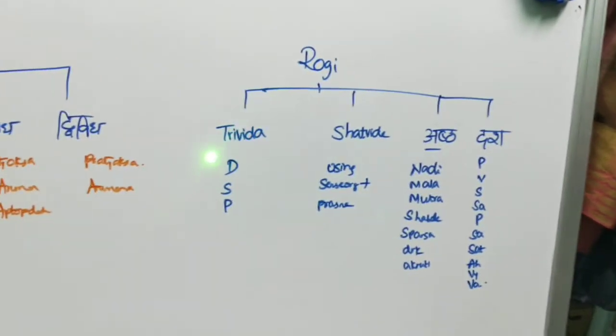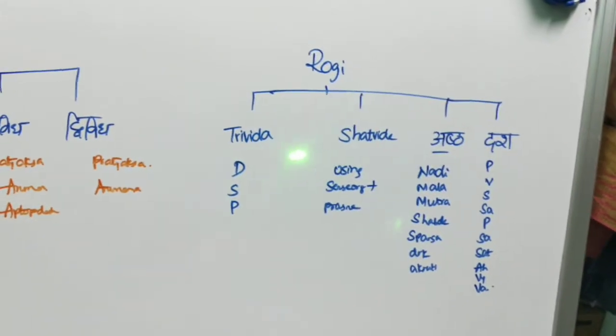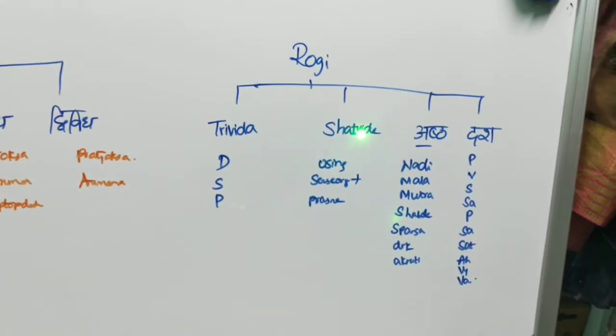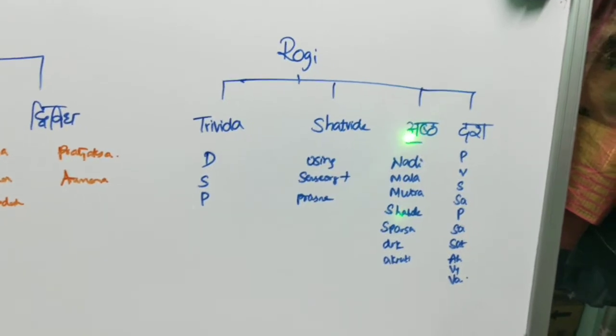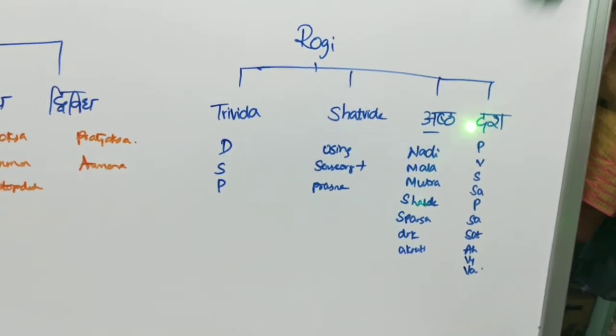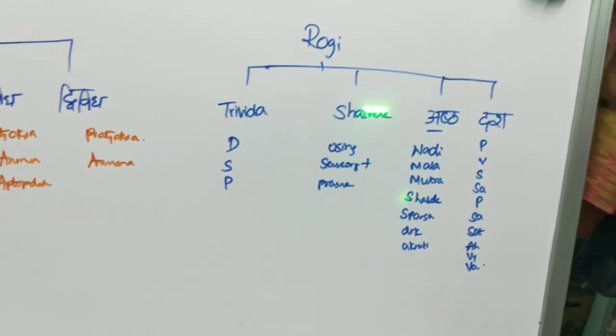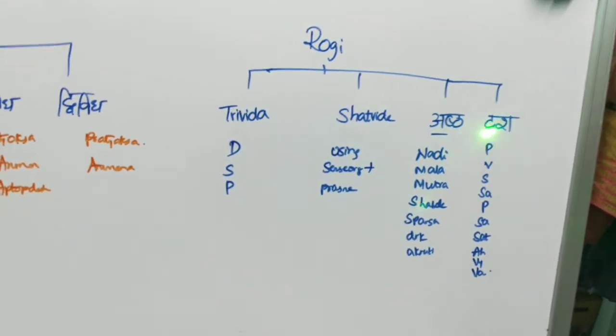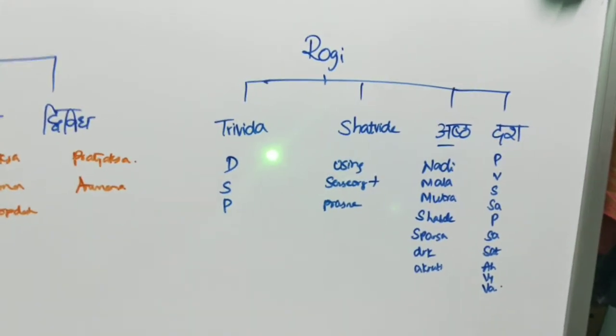Coming to Rogi Pariksha: Trividha Pariksha, Shatvida Pariksha, Asta Vidha Pariksha, and Dasha Vidha Pariksha — these are the methods of Rogi Pariksha.